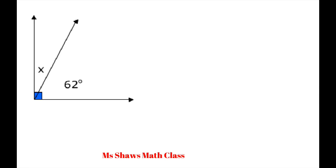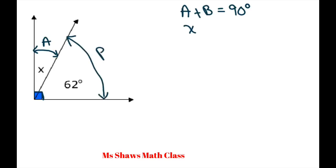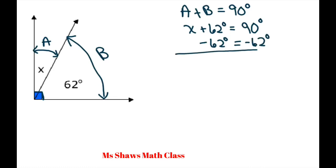In this case we don't know what this angle is. We know for complementary angles, and because this is a right angle here — this blue square — that A plus B equals 90 degrees. So if we call the unknown angle A and the other angle B, then X plus 62 equals 90 degrees. Use the subtraction property and subtract 62 from both sides, and you get X equals 28 degrees.